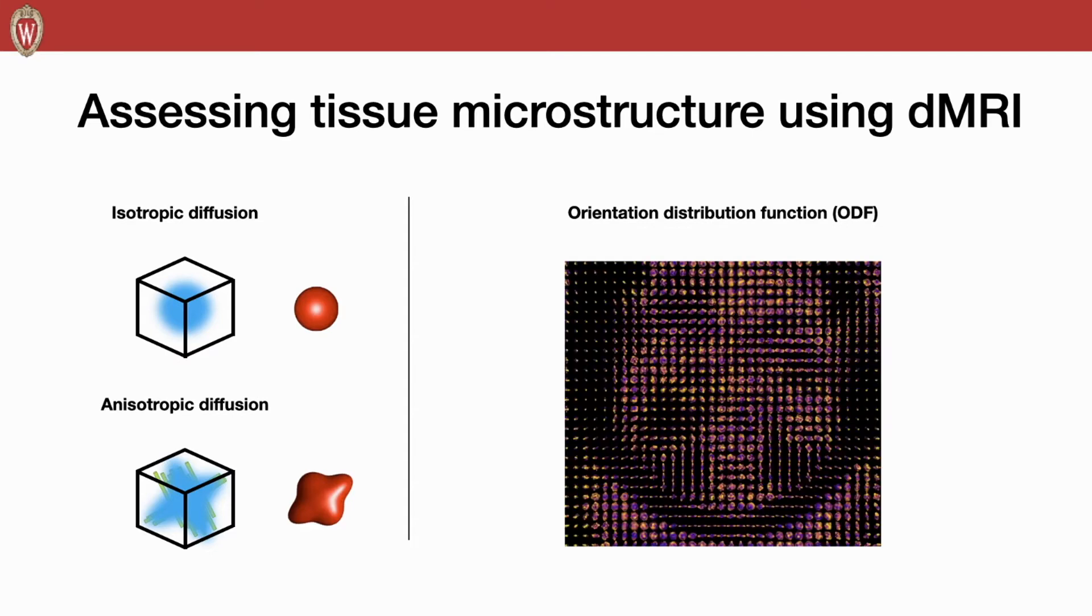The biggest benefit of ODF over DTI is the ability to measure the crossing. Also, the angular resolution is much higher for ODF. But to get a clear ODF, it would require much longer scan time, 35 minutes. It has five times longer than DTI.